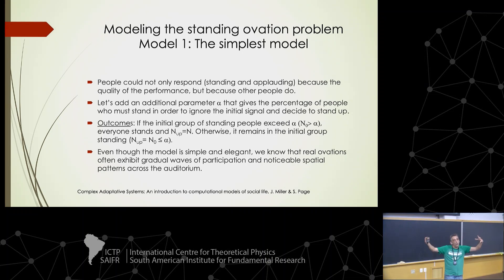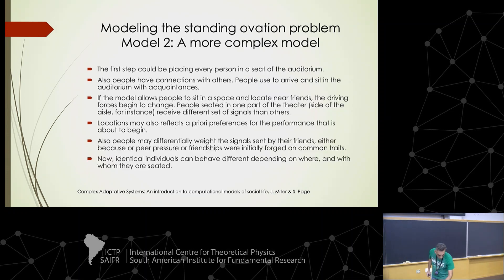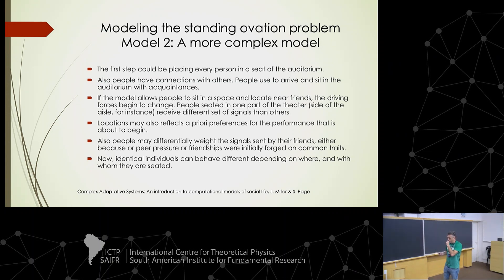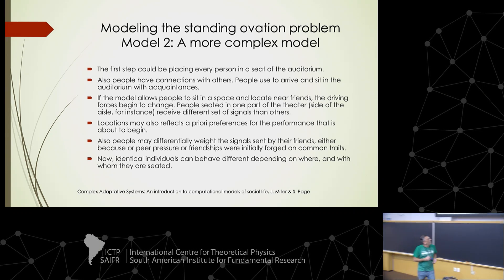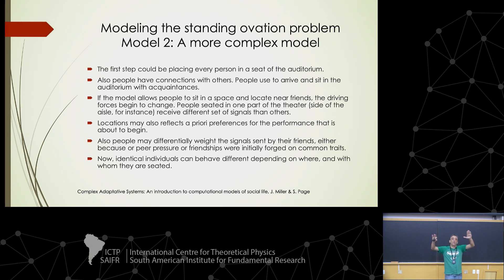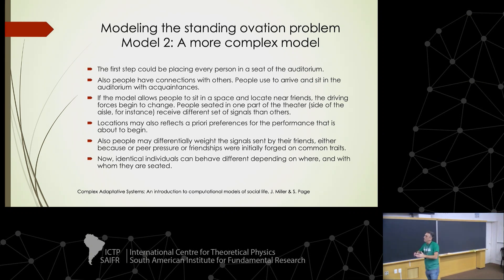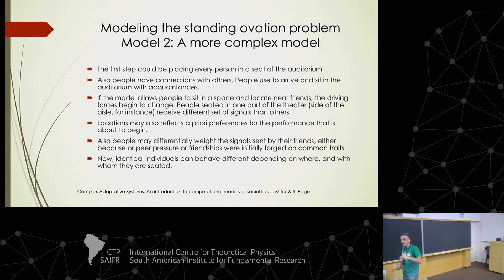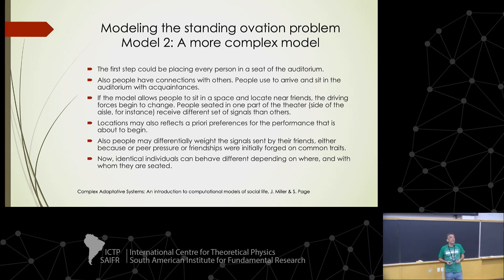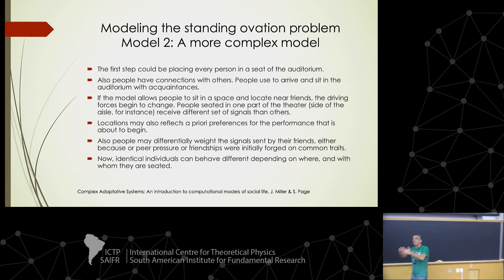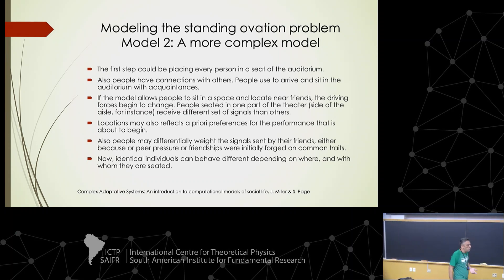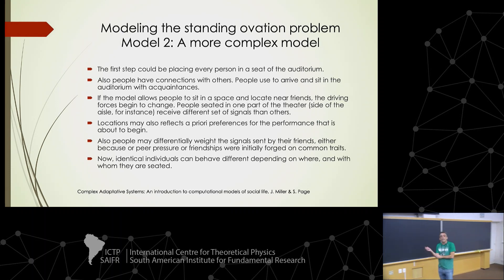There is a very simple model and the solutions are very simple. At some initial moment when the performance ends, a certain group of people will rise. If this amount of people is above the threshold alpha, the other people will also rise and the whole auditorium is standing and applauding. But if the initial group doesn't reach the threshold alpha, just the initial group of people are going to applaud. So there are two solutions because this dynamic has two instances.